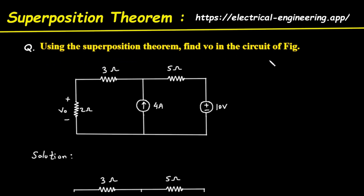The problem asks us to find the voltage V0 in the given circuit diagram using the superposition theorem. Let's first look at the circuit. On the far left, we have a 2 ohm resistor, and the voltage across it is labeled V0, with the positive terminal at the top.